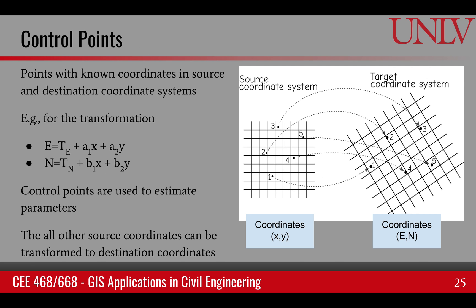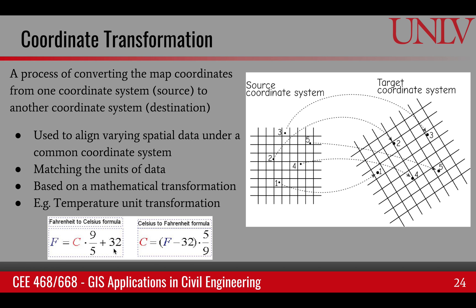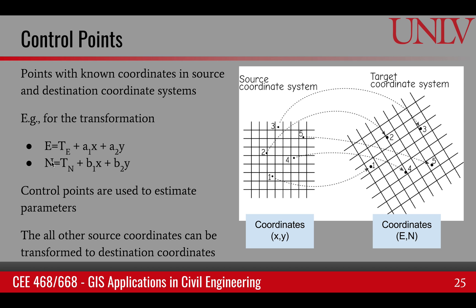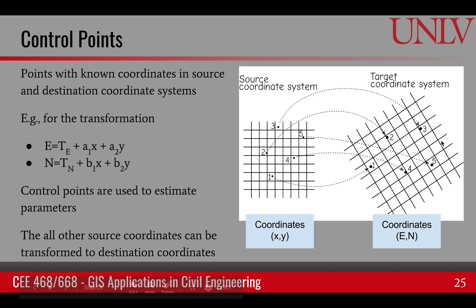Control points are what we use in this case. In the temperature example we already know the slope and intercept, but that's not necessarily true for all map transformations, so we have to find the parameters of the model. For example, if we have a scanned image, all the pixels have pixel row and column x, y coordinates, but they correspond to some latitude and longitude on the surface. We cannot transform this image to overlay on other georeferenced images until we know how to transform it, and to do that we need control points.